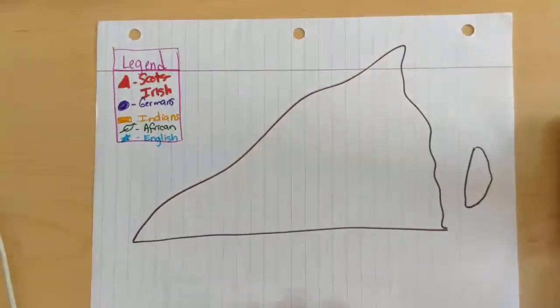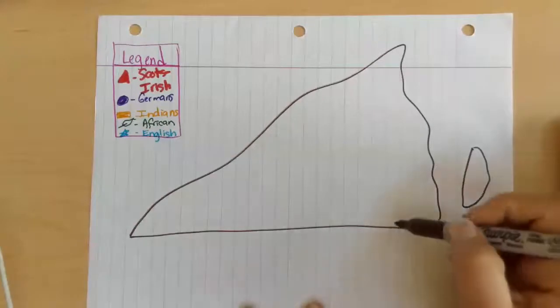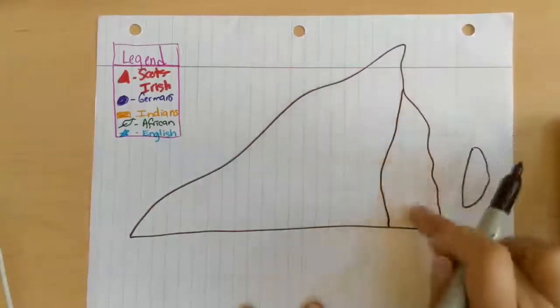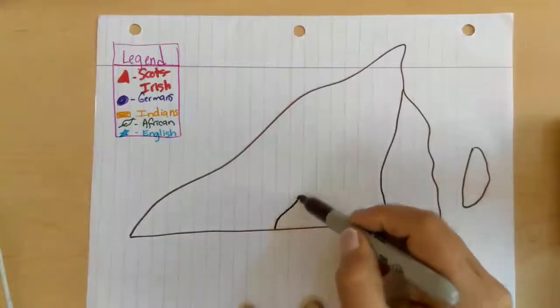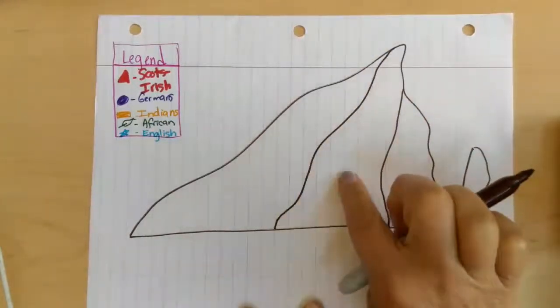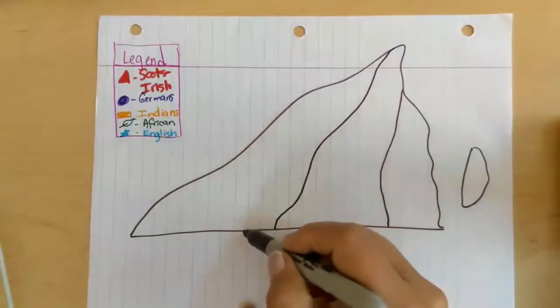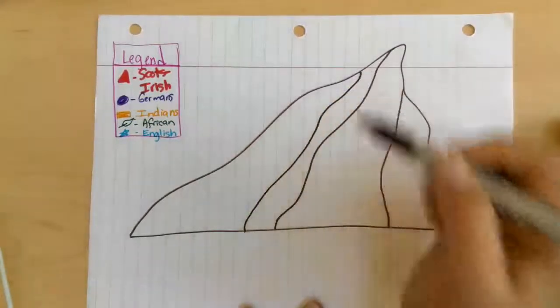And we need to kind of section off Virginia because we have the coastal plain region right here by the Chesapeake Bay, we have the Piedmont region right beside it, and we have the Blue Ridge Mountains.